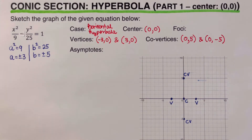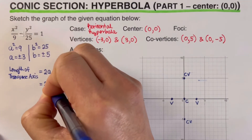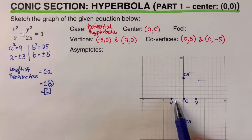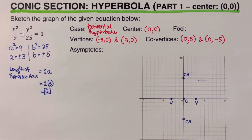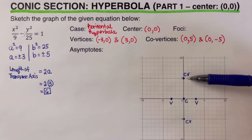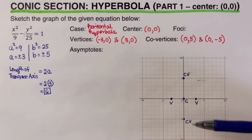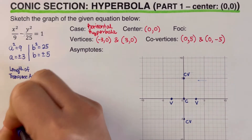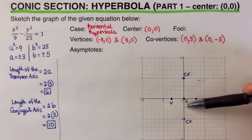From here we can determine the length of the transverse axis — the distance from one vertex to the other. Using the formula 2a, that is two times three, equals six. The length of the conjugate axis, from one co-vertex to the other, uses the formula 2b — two times five equals ten. So the length of the conjugate axis is ten.